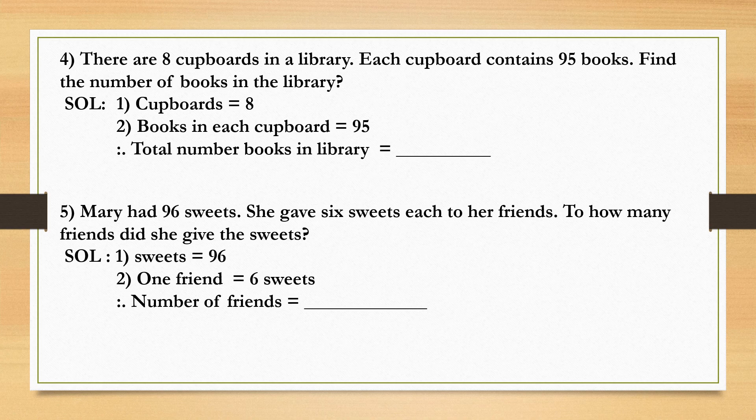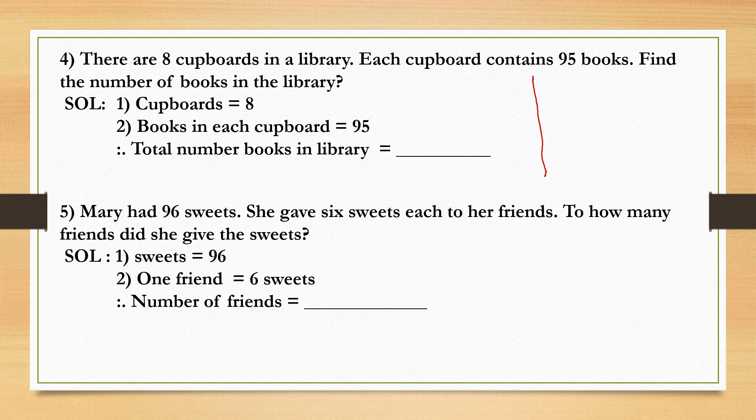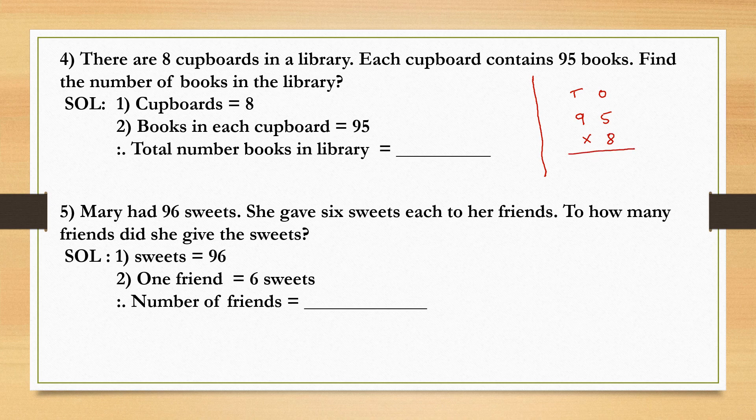Therefore, total number of books in library equal to how much? Let's do a solution box and solve the word problem. We know that there are eight cupboards and in one cupboard there are 95 books. So how to find the total number of books? Kindly write the ones and the tens place. For this problem we need to multiply 95 into eight. So when you multiply, you can get the total number of books.